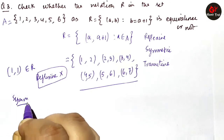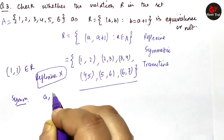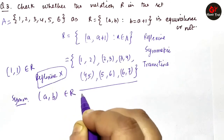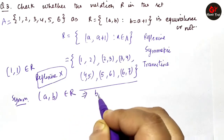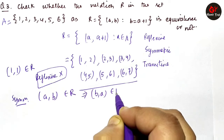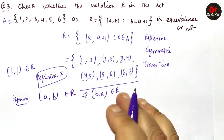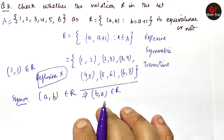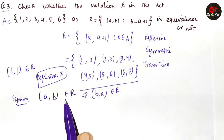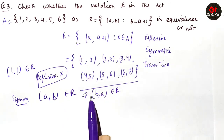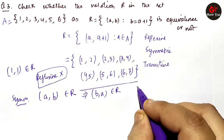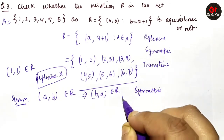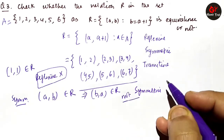Now for symmetric — we need to check one condition: if an ordered pair (A, B) is in R, then it must imply that (B, A) is also in R. If this holds, the relation is symmetric; otherwise it is not. Here, (1,2) is in R, but (2,1) is not in R. Therefore, it is not a symmetric relation.